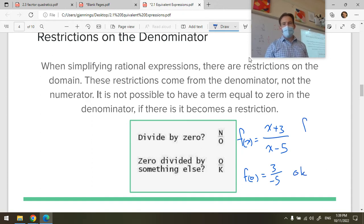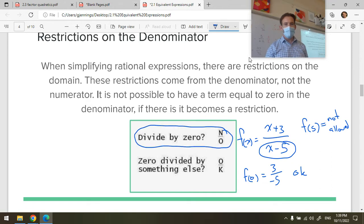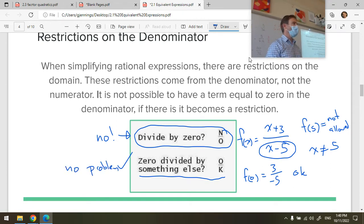I am not allowed to have f at 5. This is not allowed because it would create a 0 on the denominator. We are not allowed to divide by 0. We are not allowed to use 5 as part of the domain here. So we would say x is not equal to 5. Can x be negative 3? 0 divided by something else? Sure, no problem. 0 is a valid answer.